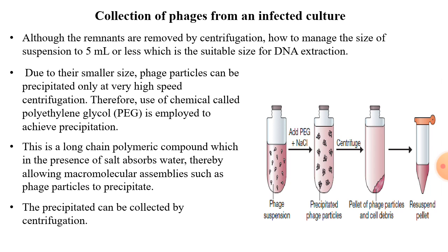Due to the smaller size of phage particles, they can be precipitated only by high-speed centrifugation. Therefore, a chemical called polyethylene glycol (PEG) is employed for active precipitation. This compound is a long-chain polymeric molecule which, in the presence of salt, absorbs water. Since phage particles are present in the aqueous layer, PEG actively absorbs and co-precipitates the phage particles. This mixture is then centrifuged, the supernatant is discarded, and the pellet containing phage is collected and resuspended.